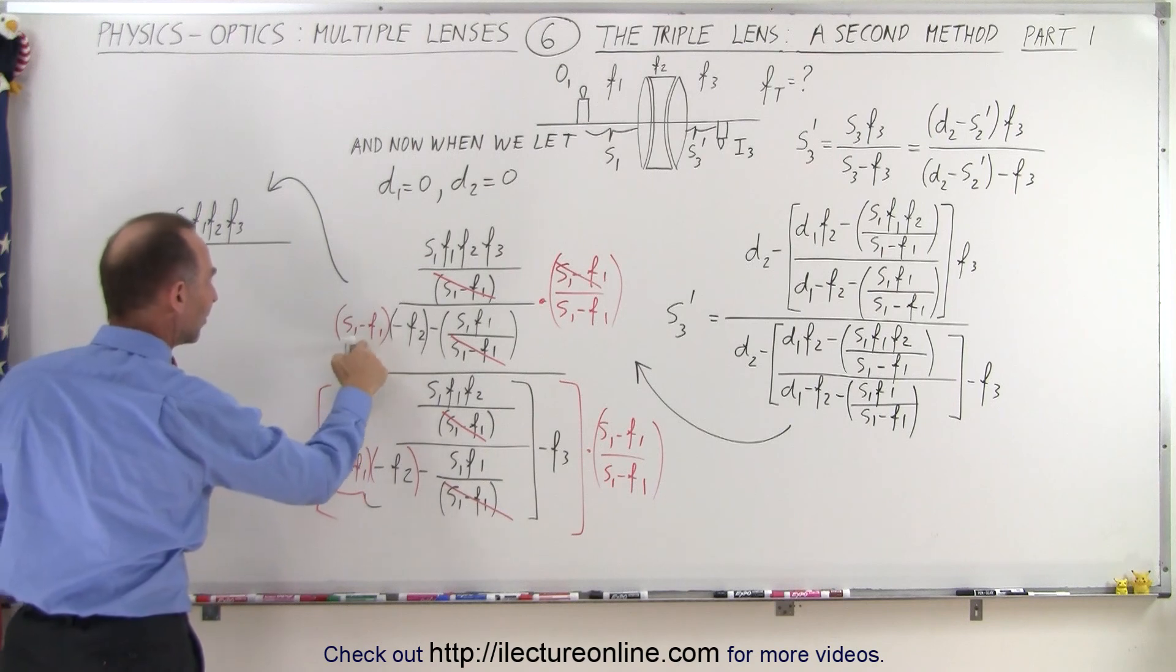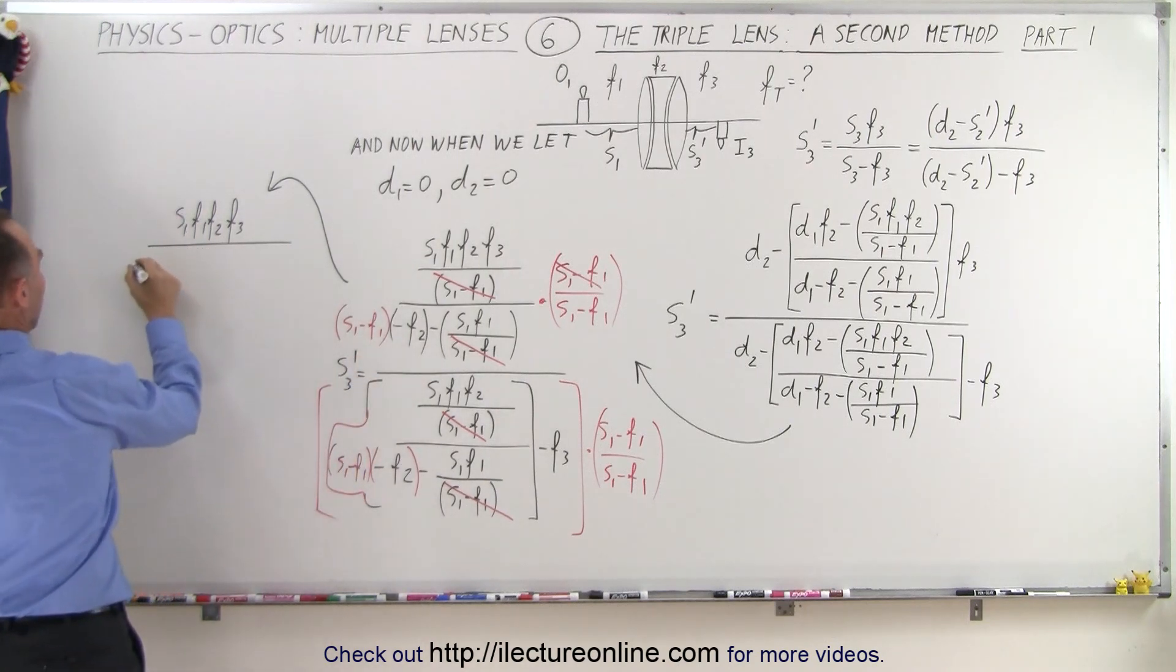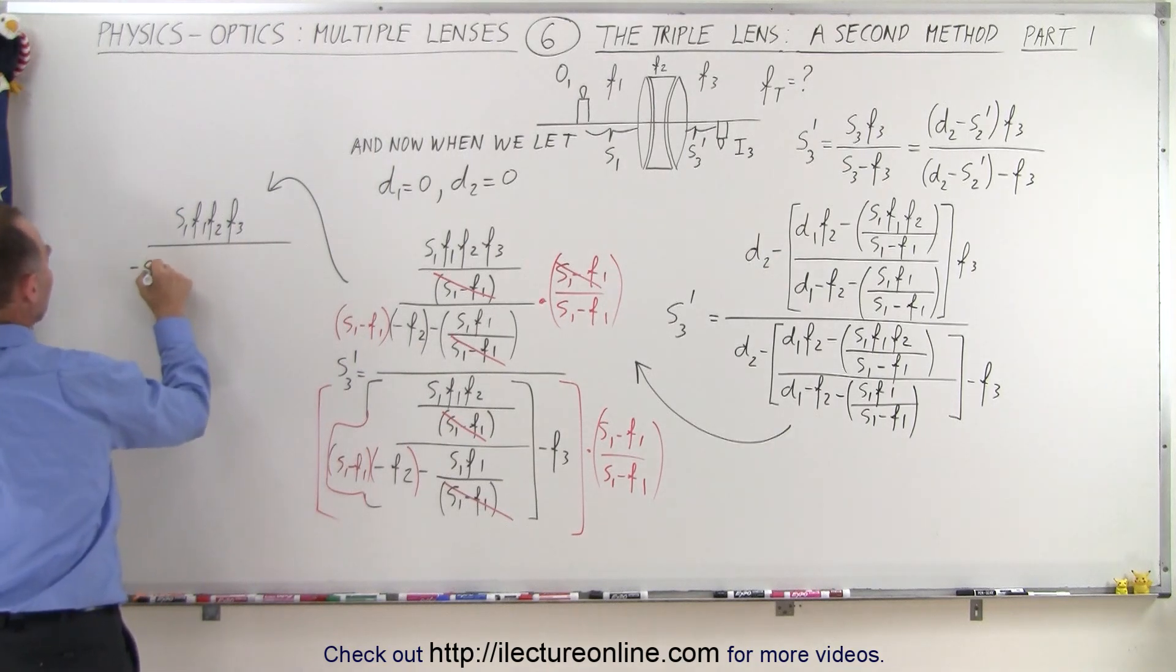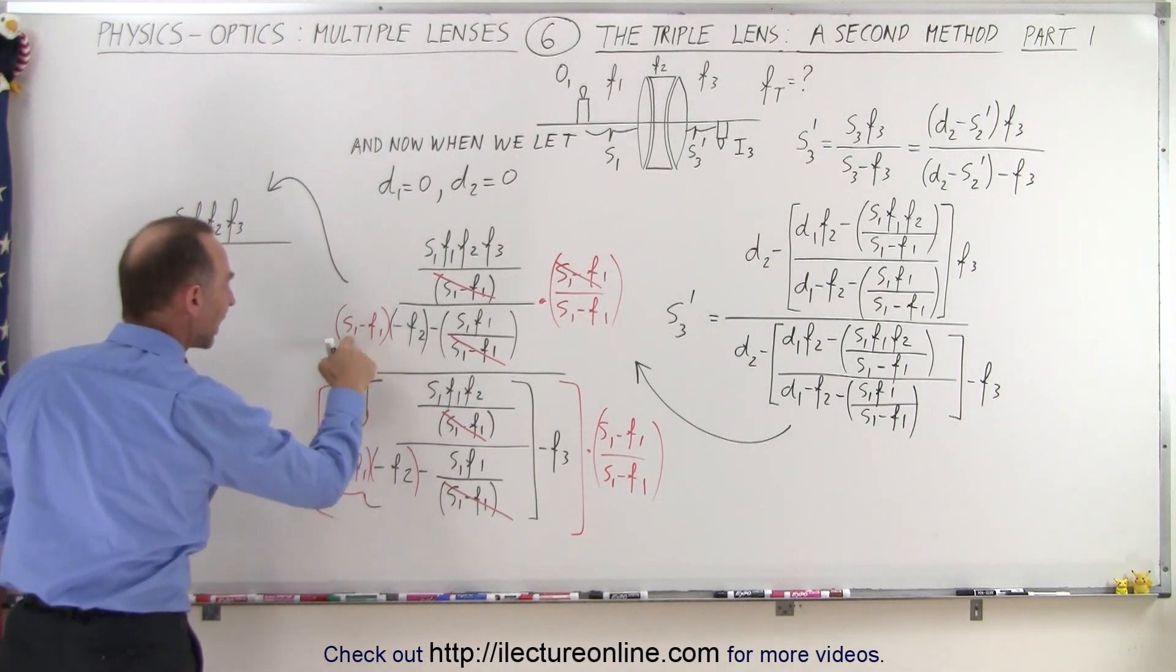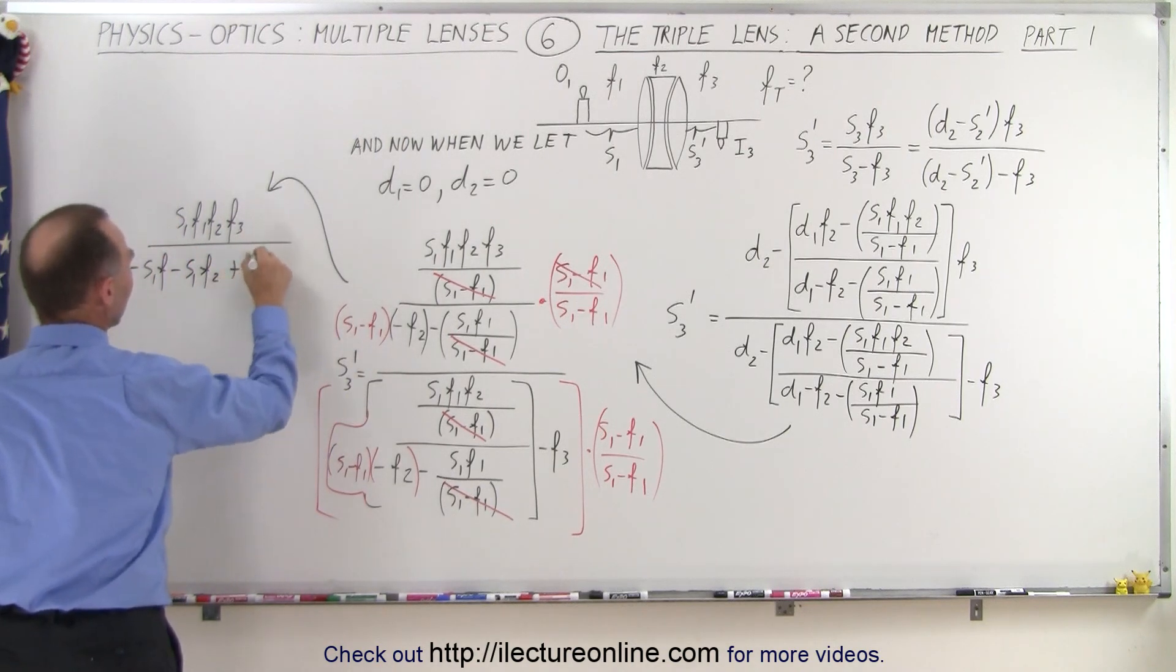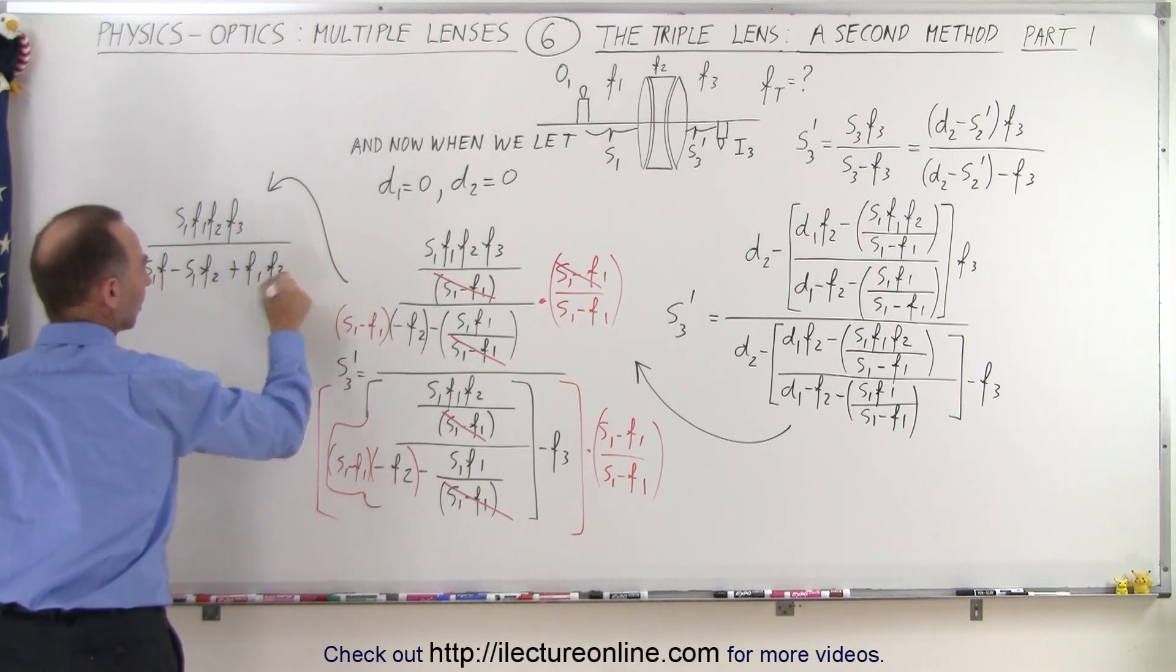let's see here, we have this times this. So we end up with a minus, let's see, we have minus S1, F1, minus S1, F1. We have a minus S1, F2, minus S1, F2, and we have a positive F1, F2 in the denominator there.